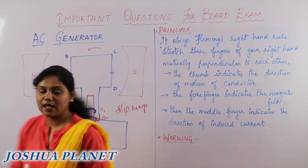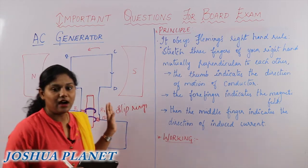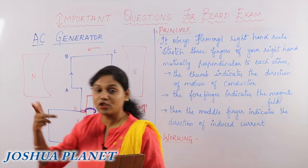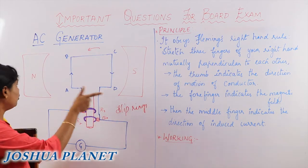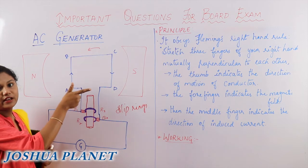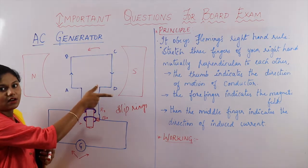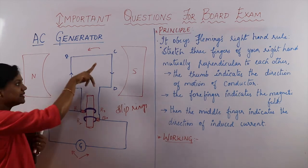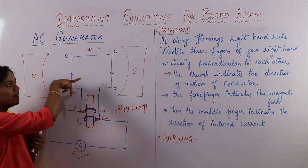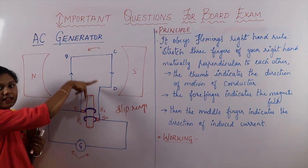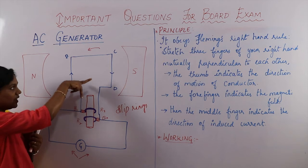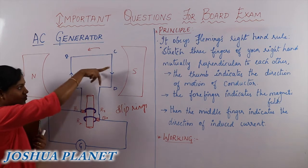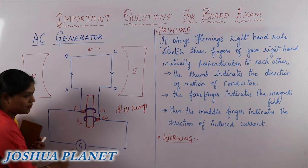Now let us check whether our generator obeys Fleming's right hand rule. Arrange three fingers of your right hand mutually perpendicular to each other. The direction of the magnetic field is towards that side, so point your forefinger accordingly. The armature is rotating anti-clockwise, so show the direction of motion towards inside the board. With these two directions given, where does the middle finger point? It points downwards — so the current produced is downwards. When you rotate the armature towards inside, the current produced is downwards, and it is shown in the galvanometer.